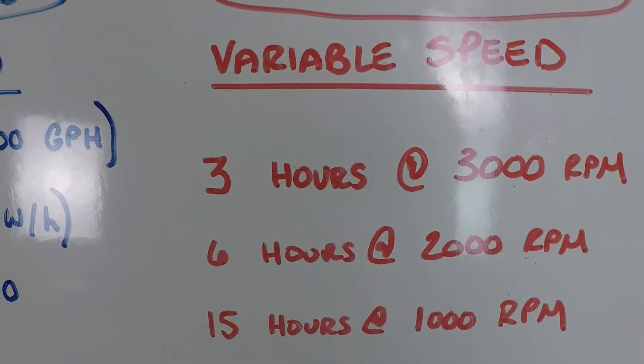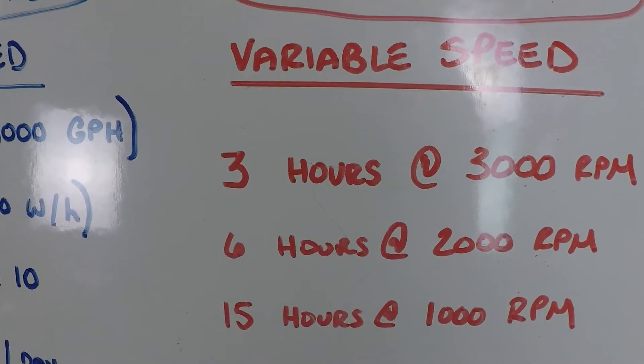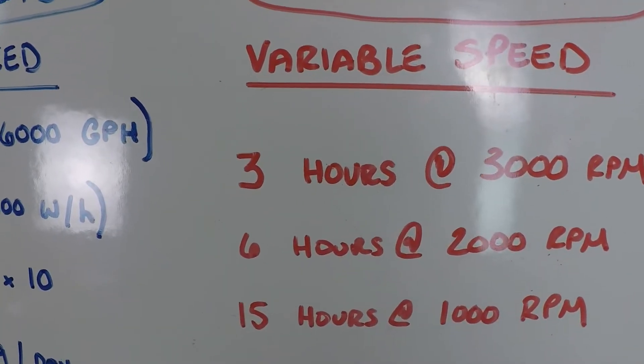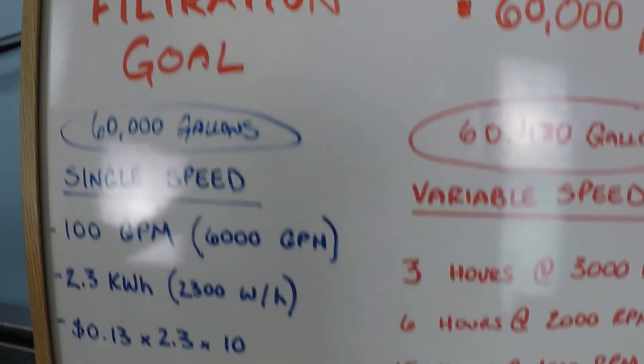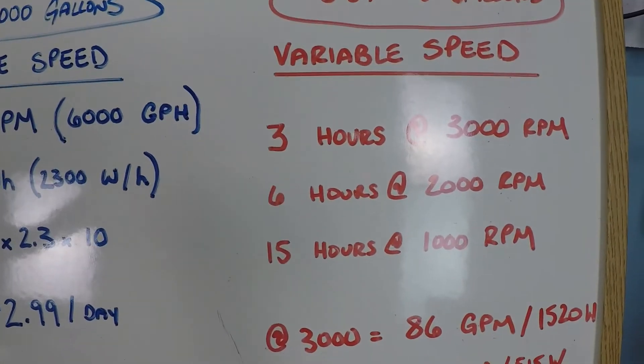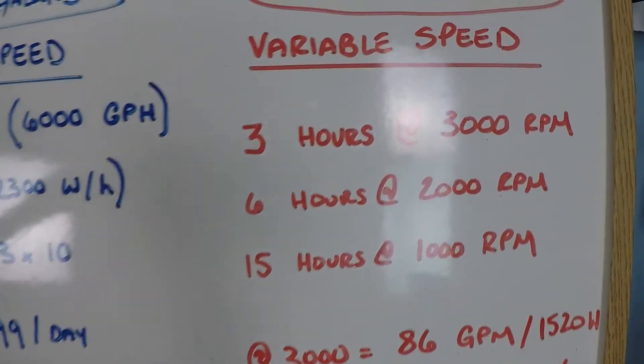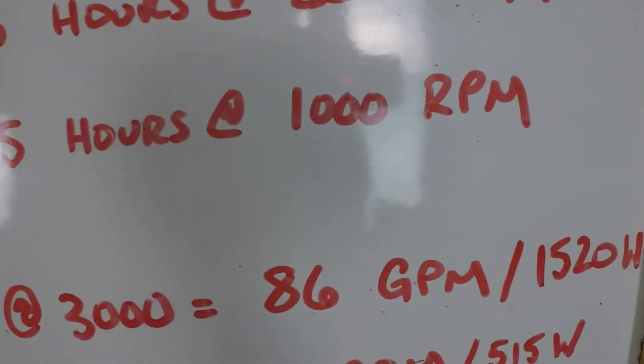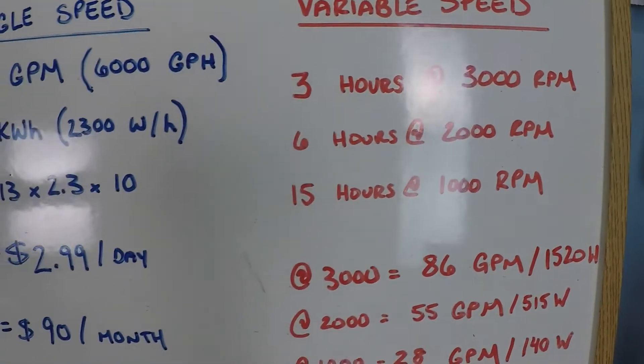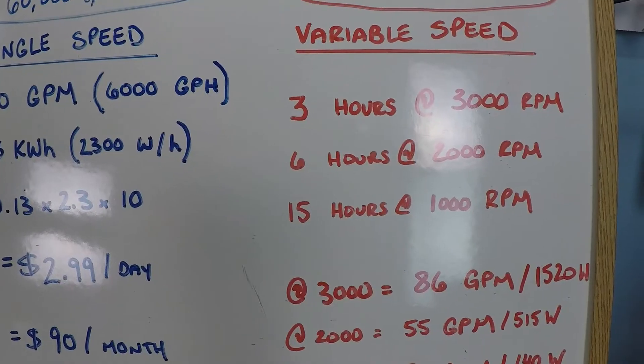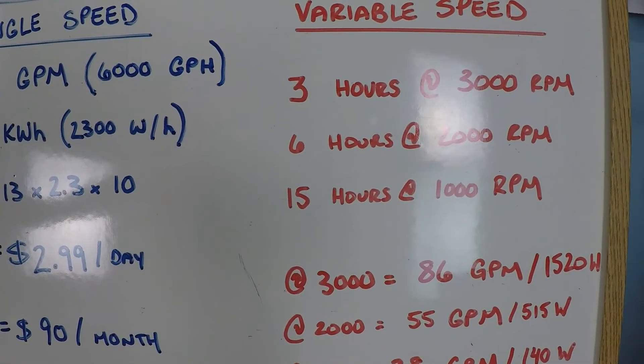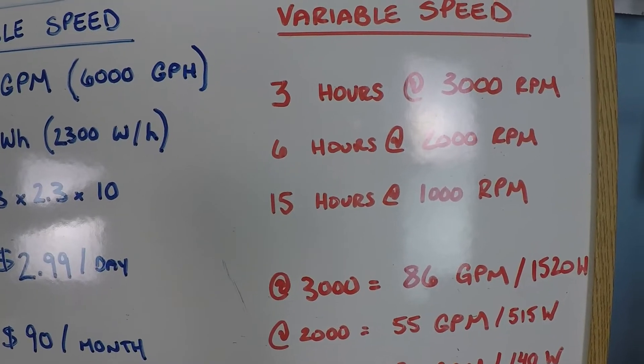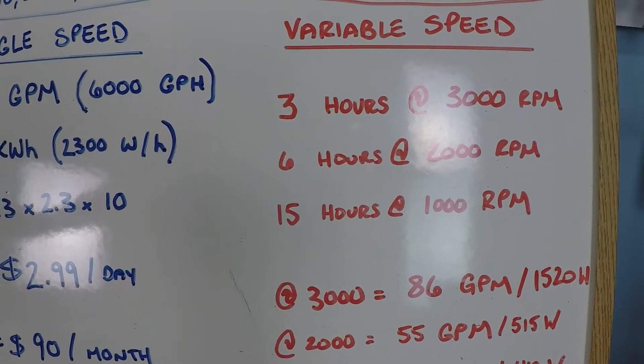You need to have times during the day where you run the pump at a higher speed, a medium speed, and a lower speed. Now this is a mistake that a lot of people might make with a variable speed pump. They might just buy one and run it all day long at 1,000 RPM. And you know what? They save a lot of money, but the quality of the filtration goes way down. That's not how this is supposed to work. You need periods of time where there's a lot of flow through your system. This is very important.